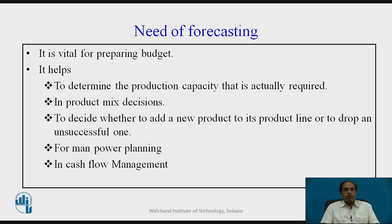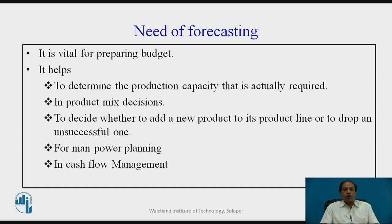What is the need for forecasting? Forecasting helps to determine the production capacity actually required, and to make product mix decisions — deciding which products to add, which new varieties to introduce, which to withdraw, and where to enhance or minimize capacity based on competition, economic conditions, and product life cycle. Management must decide whether to add a new product to the line or drop an unnecessary one. In both cases, forecasting is essential.